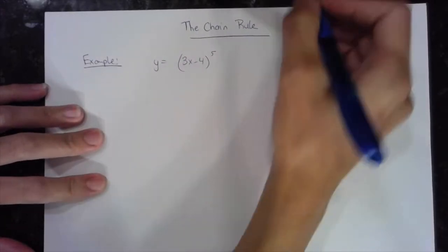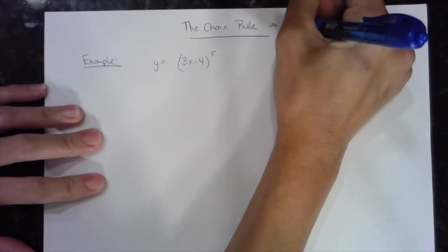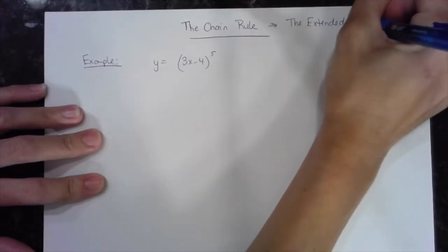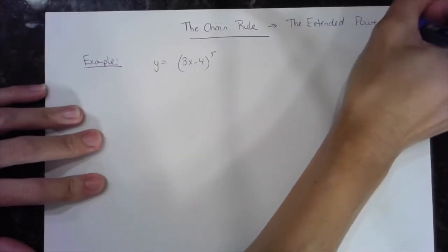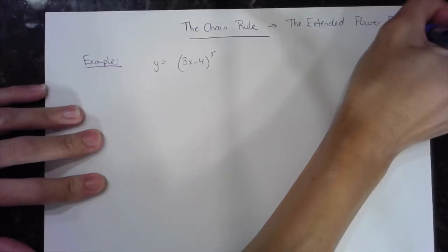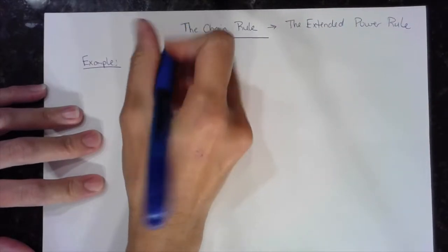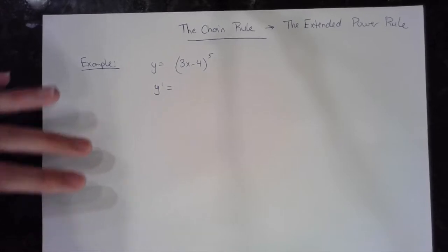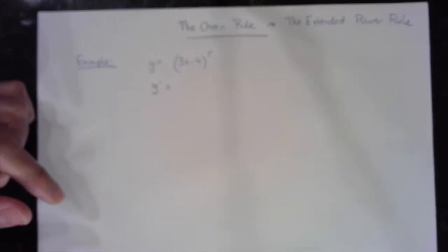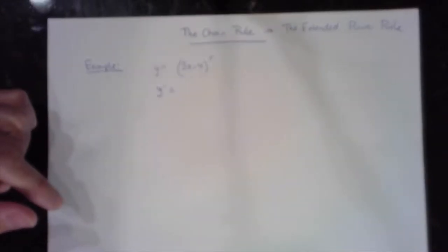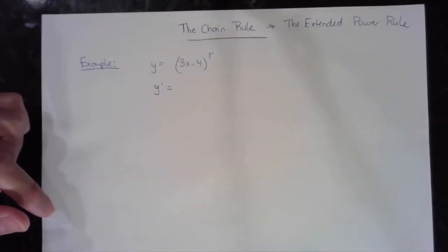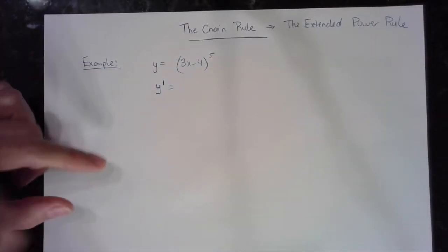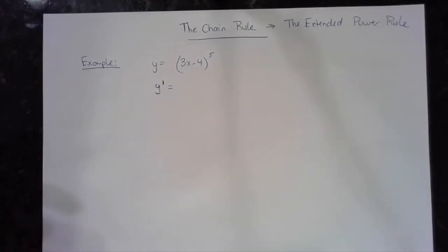Sometimes the chain rule is called the extended power rule, because we're going to basically define this first derivative, do a big power rule and then extend it into what we call the chain rule. When I find the first derivative, here's my power rule — my general power rule.